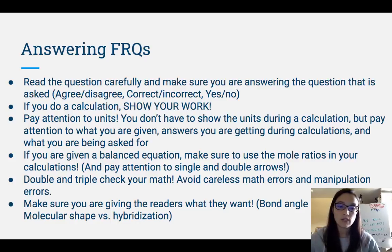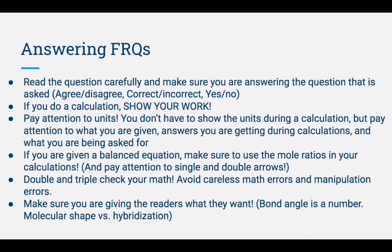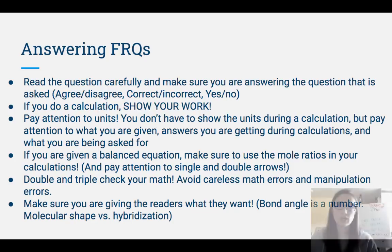Make sure that you are giving the readers what they want — the readers are the ones grading your test. If they ask for bond angles, that's a number. If they ask for molecular geometry, you should be talking about tetrahedral, trigonal bipyramidal, seesaw, or T-shape. Hybridization is SP, SP2, or SP3. Make sure that you are giving the readers exactly what they want.